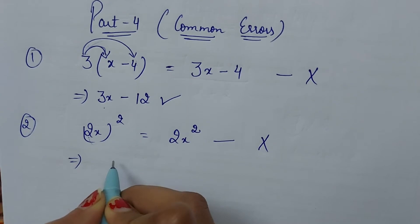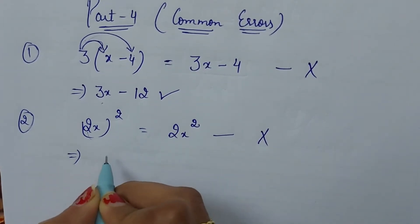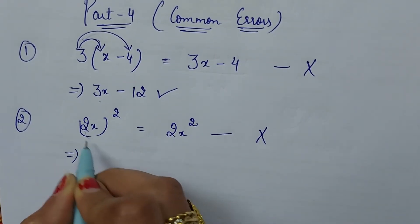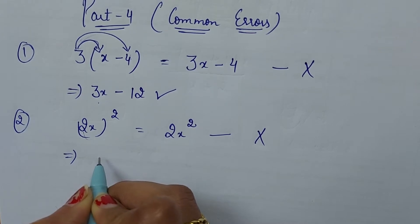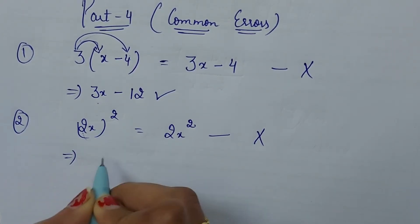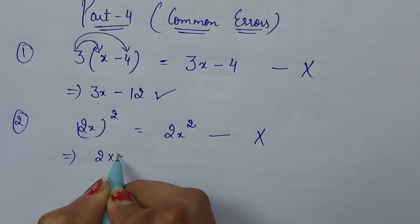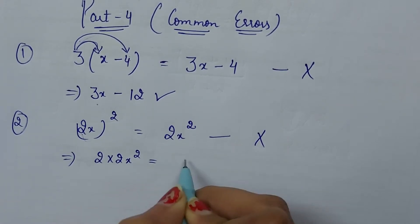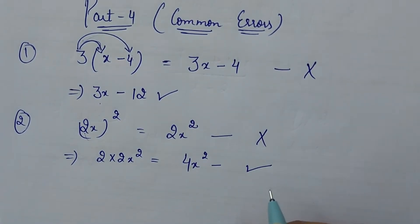This is the correct answer: 2x square ka matlab 2 into 2x square. It means 4x square. This is the correct answer.